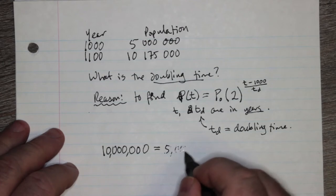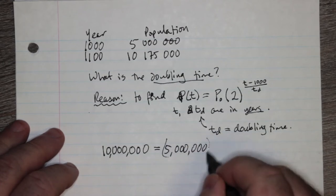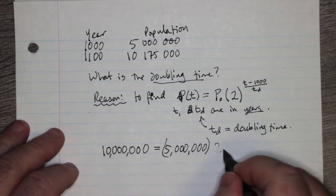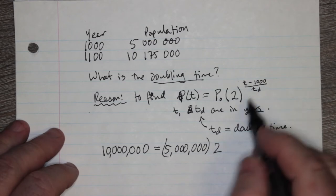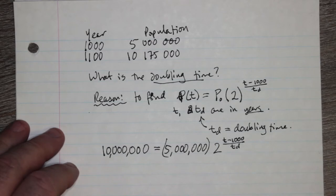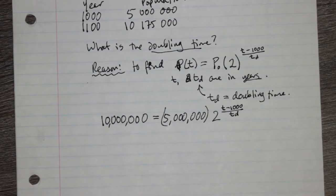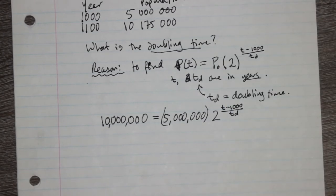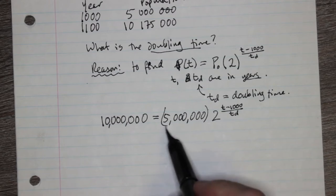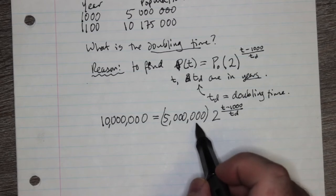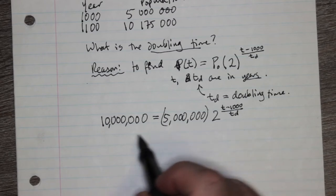So our P naught, our P0, is the population at time 0 or at the beginning, so that's going to be 5,000,000 and that's going to be multiplied by 2 raised to this t minus 1,000 over td. This kind of looks daunting because we have two unknowns, but we can make things a little bit better here. We can get rid of these humongous coefficients.